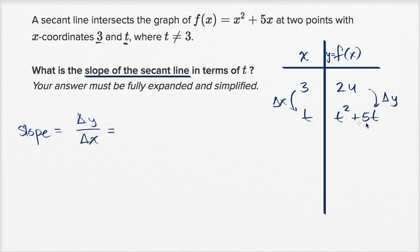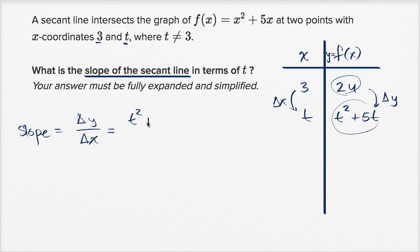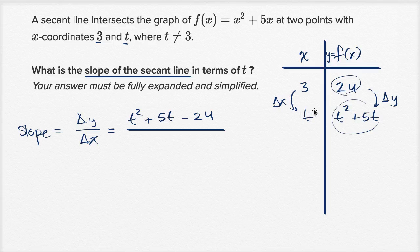Our change in y, if we view this as our end point, the second one with the t's in as our end point, it's going to be that minus that. So it's going to be t² + 5t - 24. And then in our denominator, our ending x minus our starting x is going to be t - 3.